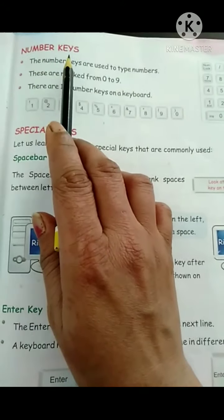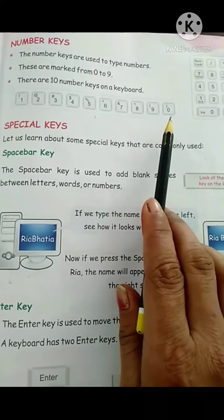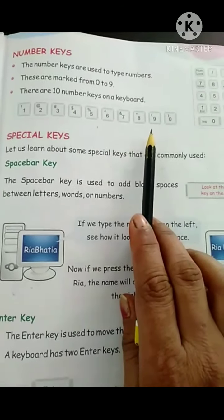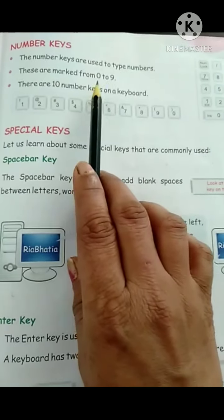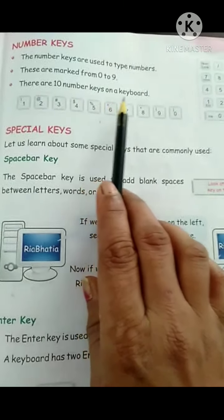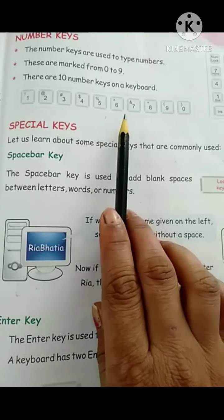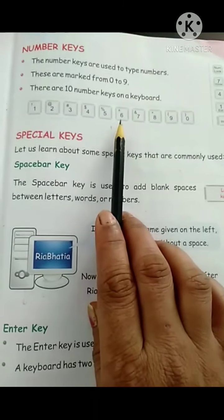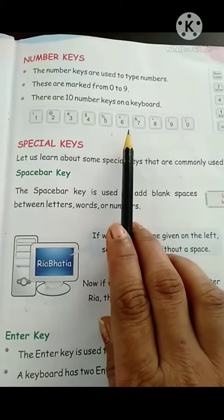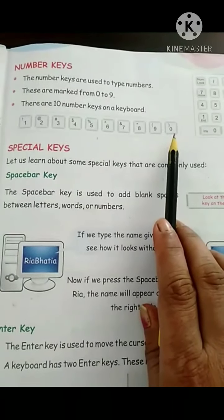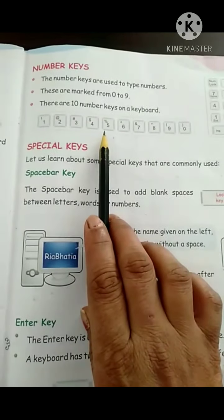The next key is number keys: 1, 2, 3, 4, 5, 6, 7, 8, 9, and 0. There are 10 number keys on the keyboard. The number keys are used to type numbers and are marked from 0 to 9. You can use number keys to write any number, big or small. Two sets of number keys are given on the keyboard — one on the right side and one on the left side.